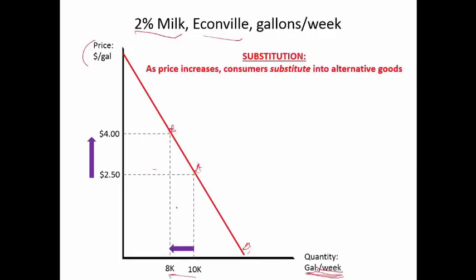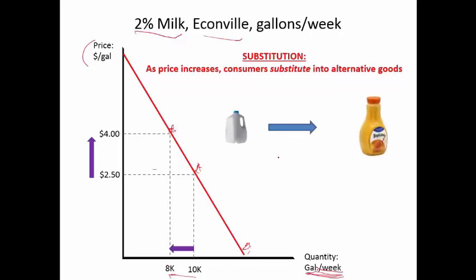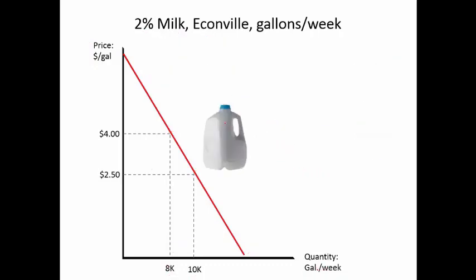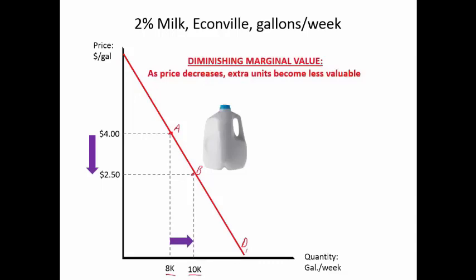Notice our terminology: when price rose, what changed was quantity — the quantity purchased declined from 10,000 to 8,000. We don't say demand changed; demand is the demand curve itself, labeled D1. That didn't change — we just moved along it from point A to point B. As the price goes up, substitution happens: people buy less of this good because it's too expensive and likely buy more of other goods, for example buying less milk and more orange juice with their grocery money.